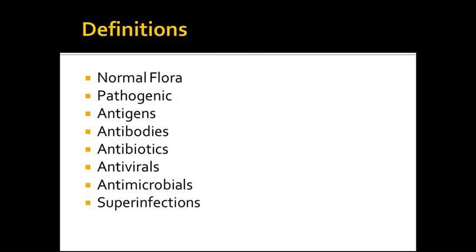Antivirals are a class of medications that we use to treat viral infections. Antimicrobials — antibiotics and antivirals — fall under this classification. This can be anything from medications to disinfectants and so on. Superinfections are secondary infections that occur while antibiotics are destroying the first infection. Most common examples of this are C. diff and yeast infections.